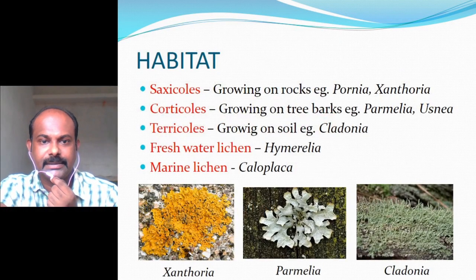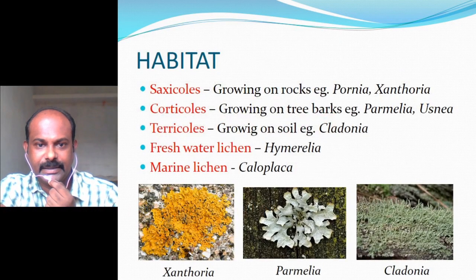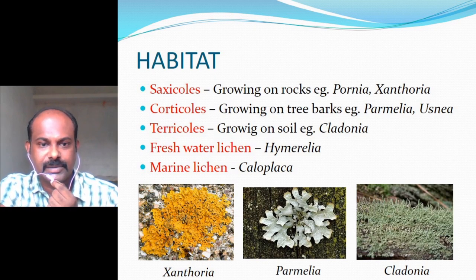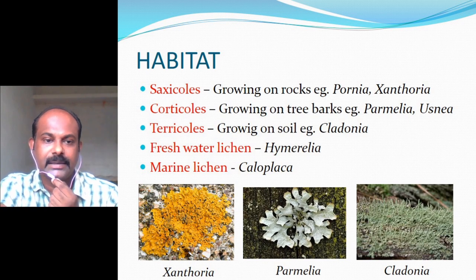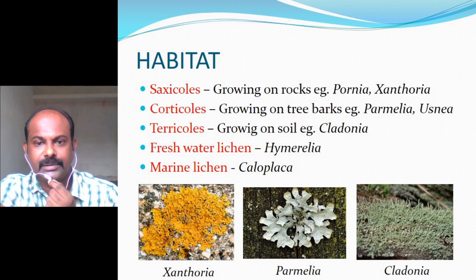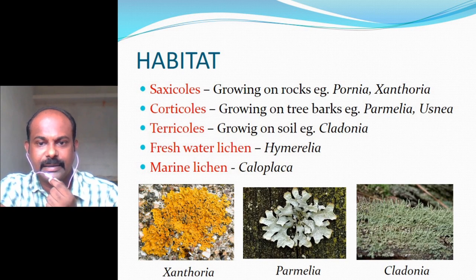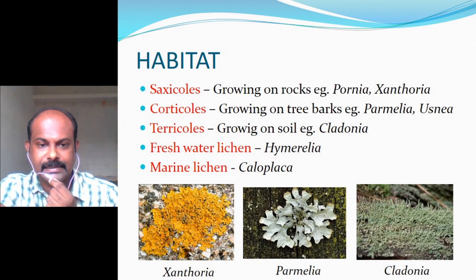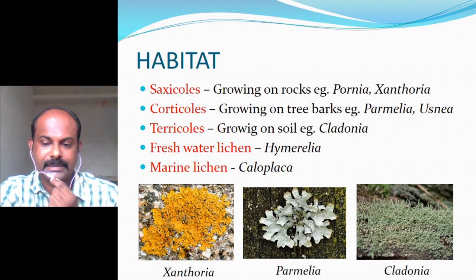Based on habitat, lichens can be classified as Saxicoles (grow on rocks; example: Porina, Pertusaria, Xanthoria), Corticoles (grow on tree bark; example: Parmelia, Usnea), Terricoles (grow on soil; example: Cladonia), Freshwater lichens (example: Hymenelia), and Marine lichens (example: Caloplaca).